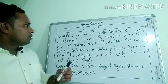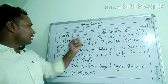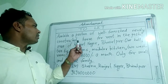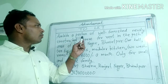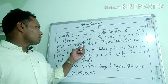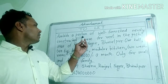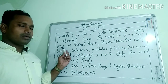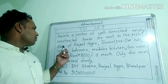To Let के लिए मैंने एक example advertisement तैयार किया है। इसमें हम लिखेंगे: 'Available — a portion of well furnished, newly constructed house available for rent.' यानि एक अच्छी तरह सुसज्जित, नव-निर्मित घर का एक भाग किराये के लिए उपलब्ध है। यह in the posh area — एक अच्छी कॉलोनी में स्थित है।